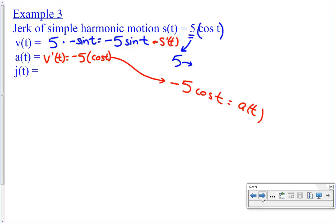Now, what's the jerk? The jerk is the derivative of acceleration. So, that's negative 5 times the derivative of cosine, which is negative sine. And watch the fun. Negative times negative is positive. That is the jerk. If I take the derivative of jerk one more time, what do I end up with?